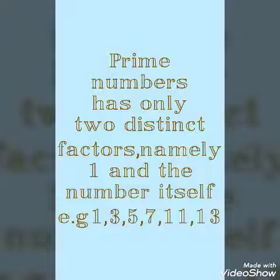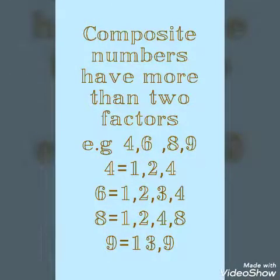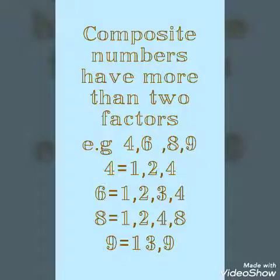Next we have composite numbers. Composite numbers have more than 2 factors. For example: 4, 6, 8, and 9. You can see all 4 of these numbers have more than 2 factors. 4 has 3 factors: 1, 2, and 4. 6 has 4 factors: 1, 2, 3, and 4. 8 also has 4 factors, and 9 has 3 factors. There are many more examples of composite numbers that have more than 2 factors.